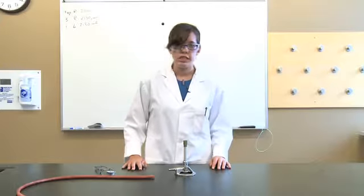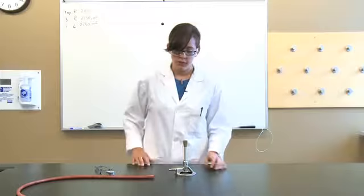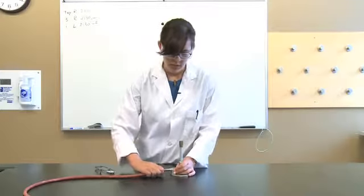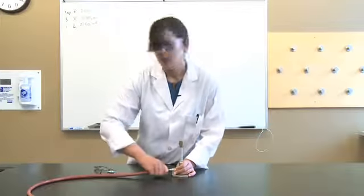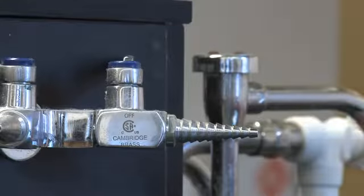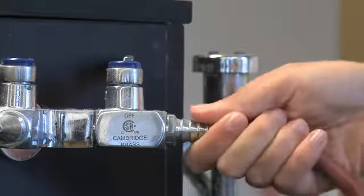Now that you know all the safety precautions, you can begin to light your Bunsen burner. The first step is to attach the hose to both the Bunsen burner and to the gas line. Make sure that you attach it to the gas line and not an air or a water line.